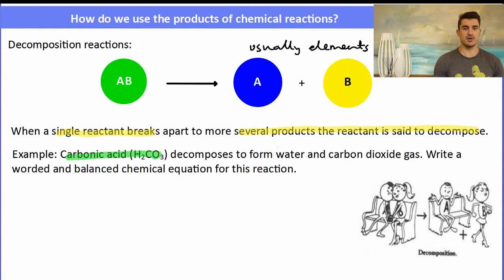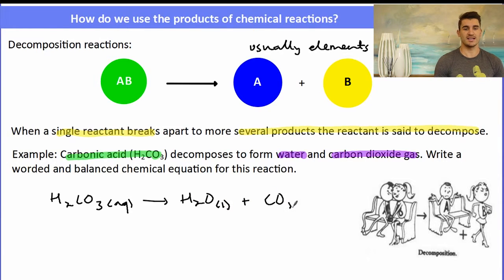For example, carbonic acid decomposes to form water and carbon dioxide gas. Write a worded and balanced chemical equation for this reaction. I'm going to skip the worded equation and go straight to the balanced chemical equation. So we have carbonic acid, H2CO3, that would be aqueous because acids are aqueous. Decomposes to form means we have our arrow and our products are water and carbon dioxide gas. Water liquid, carbon dioxide gas. Is that balanced? I have two hydrogens on the right, two hydrogens on the left. And the CO3 breaks apart into the CO2 and the extra oxygen is in the water. So that's balanced.